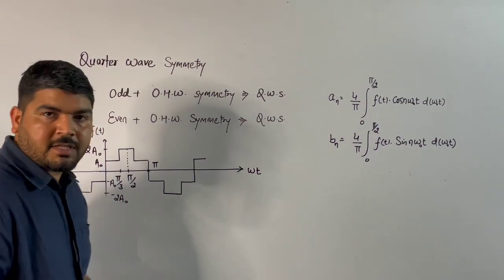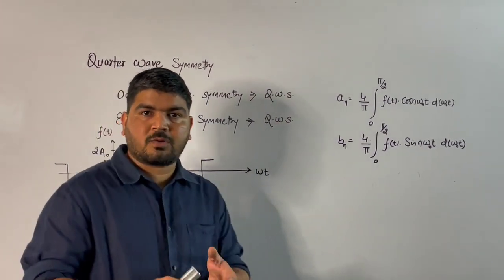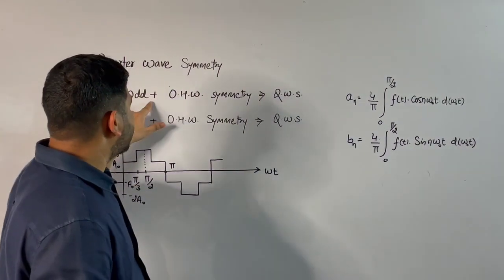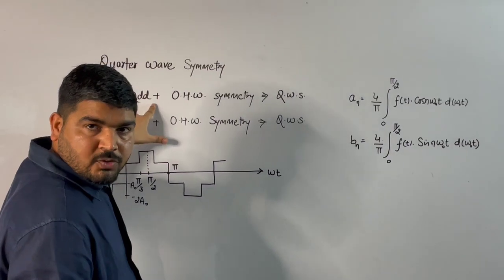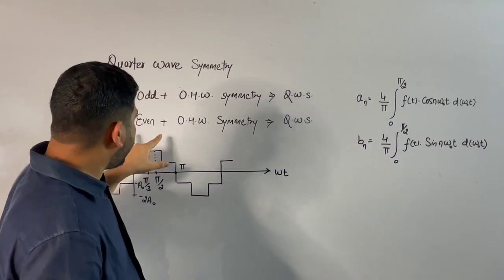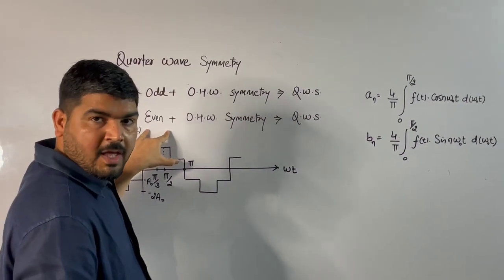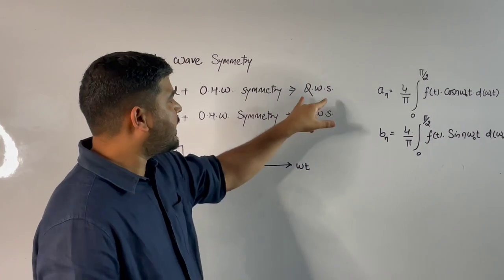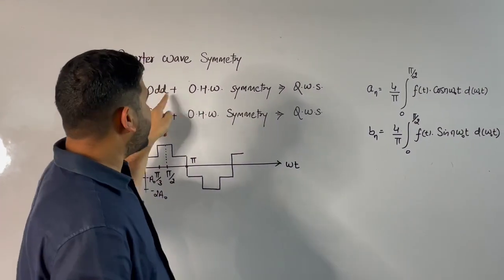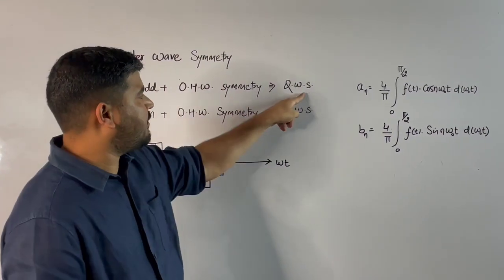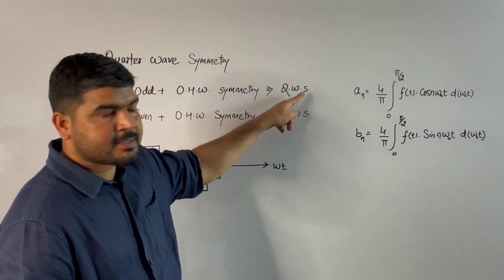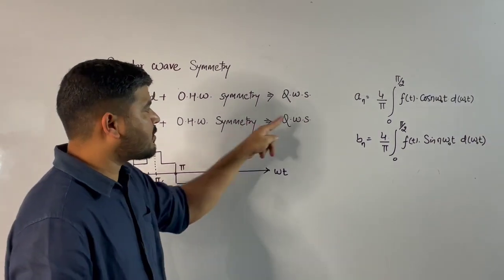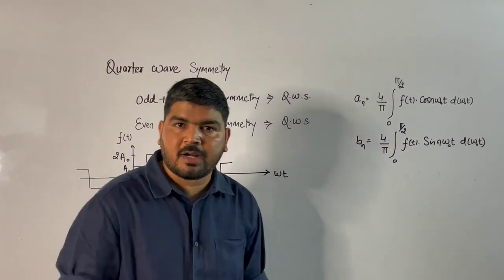How to check whether the wave has quarter wave symmetry or not? If any signal is odd or even and it has odd half wave symmetry, then odd plus odd half wave symmetry will form quarter wave symmetry. Similarly, even plus odd half wave symmetry will also make quarter wave symmetry.